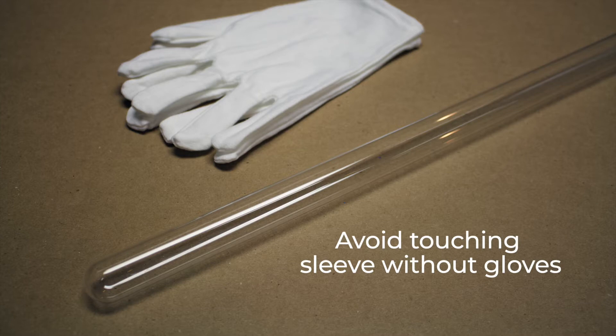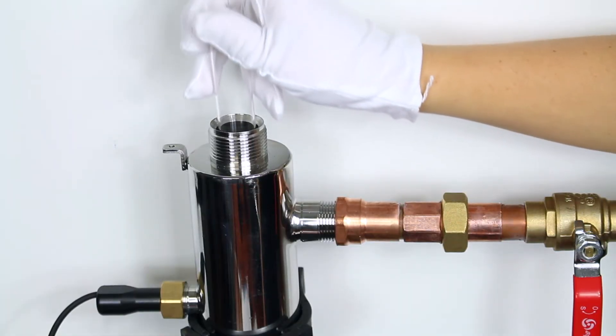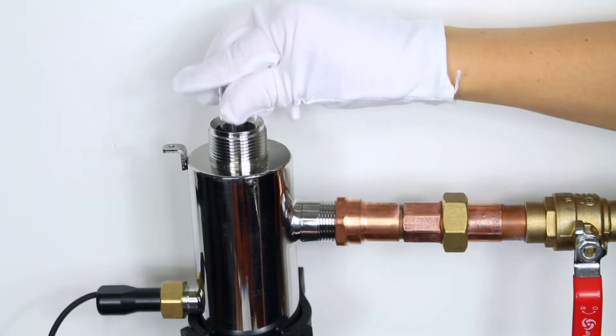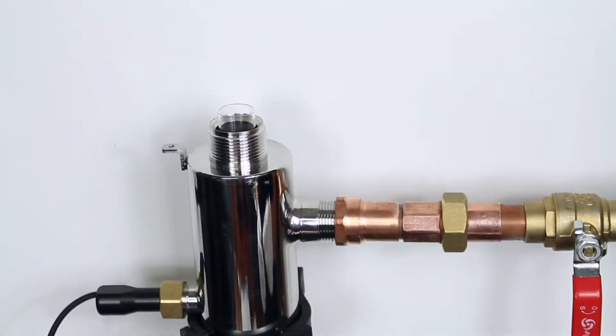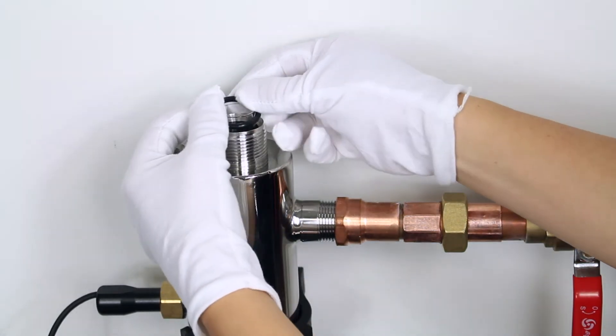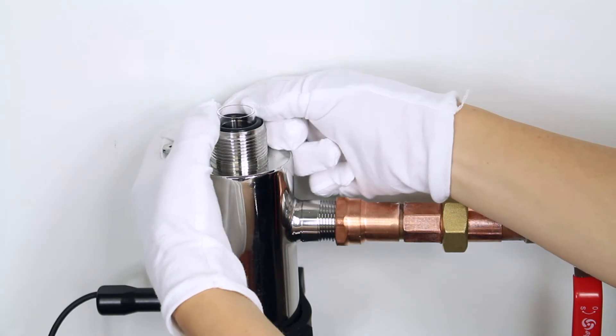Remove new quartz sleeve from its packaging using soft lint-free gloves. Insert new sleeve into the chamber domed side in, ensuring that it is straight and sits right in the middle of the basket at the other side of the chamber. Once the sleeve is seated, remove the new o-ring from its packaging and place it on top of the new sleeve.